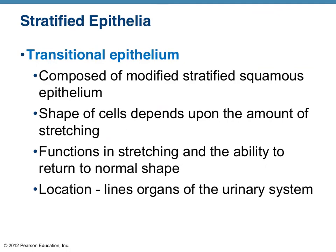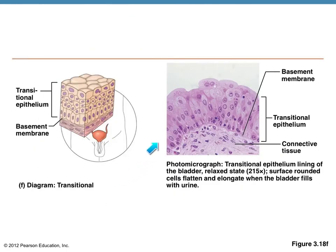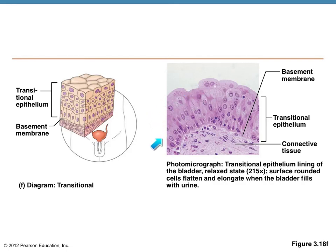Another type we won't spend a lot of time with is called transitional epithelium. The reason it's transitional is that it can actually change shape — it essentially lines your bladder. If your bladder gets full, the tissue is allowed to stretch, and these cells will flatten, allowing your bladder to accumulate urine. In the picture you can see the free surface, the free space, and the basement membrane. The cells at the edge have a very rounded, bulbous appearance, but as the tissue stretches, they would actually flatten out and look more like stratified squamous tissue.